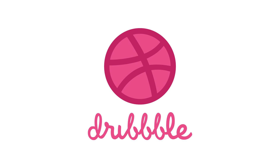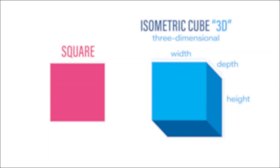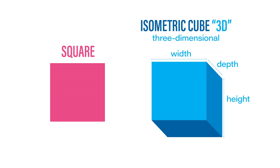For this example I choose the Dribbble logo. Before anything let's take a look about perspective. On the left we have a simple square, on the right we have what we call a cube. The 3D word means width, depth and height.